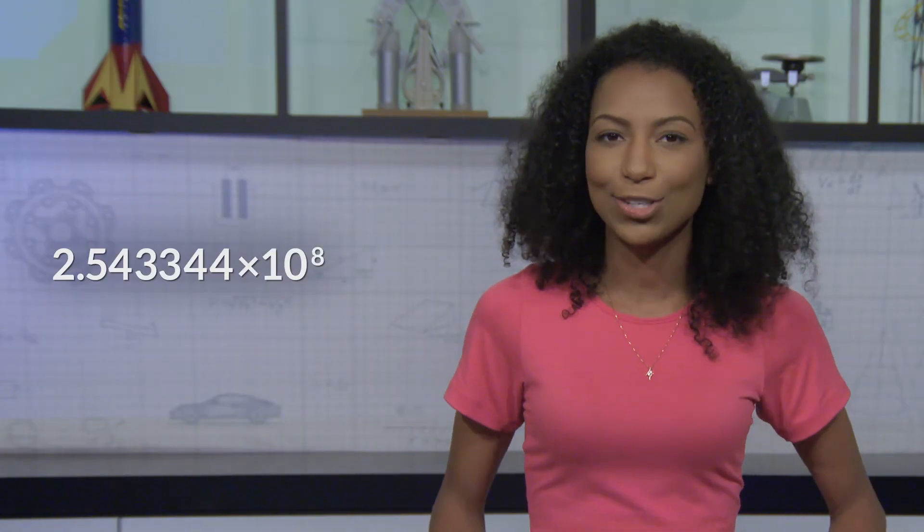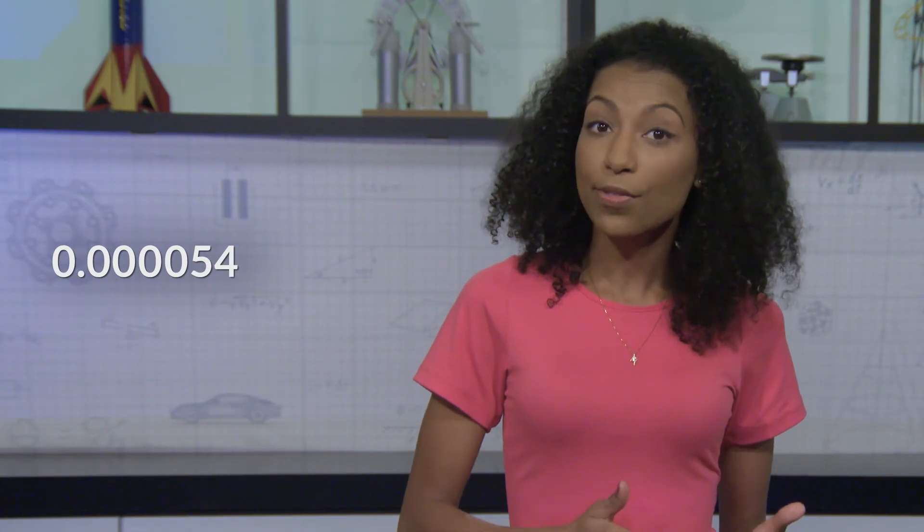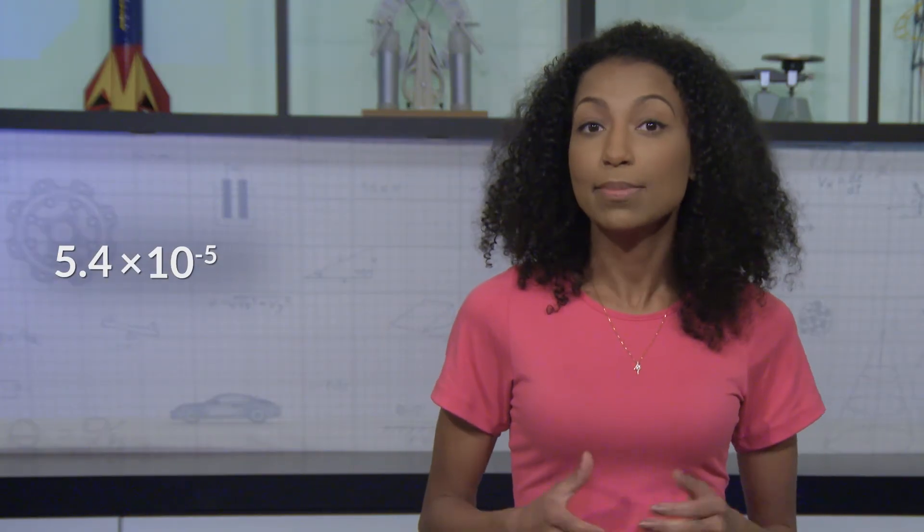And that's scientific notation. Let's do one more, this time with a number less than 1. Let's say our number is 0.000054. Remember, we have to find a number greater than or equal to 1 and less than 10. To get there, we move the decimal to the right: 1, 2, 3, 4, 5 spaces. Our number is less than 1, so the power is negative. In scientific notation, we have 5.4 times 10 to the negative 5.